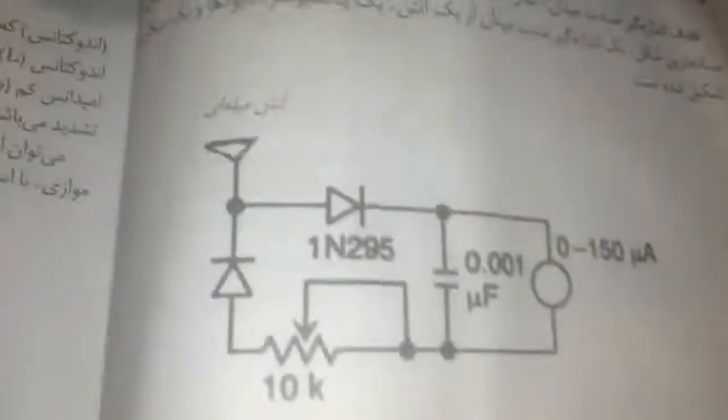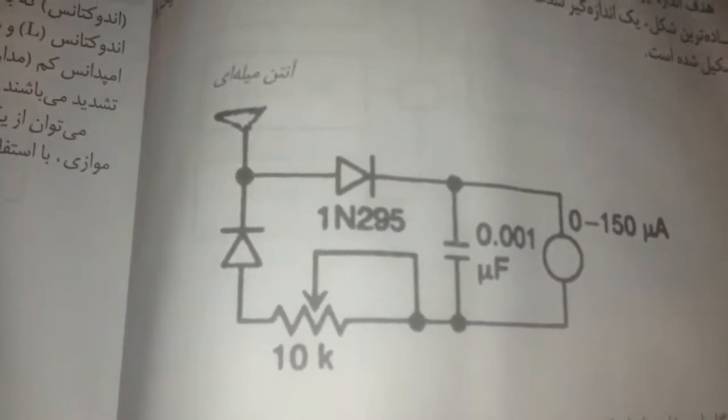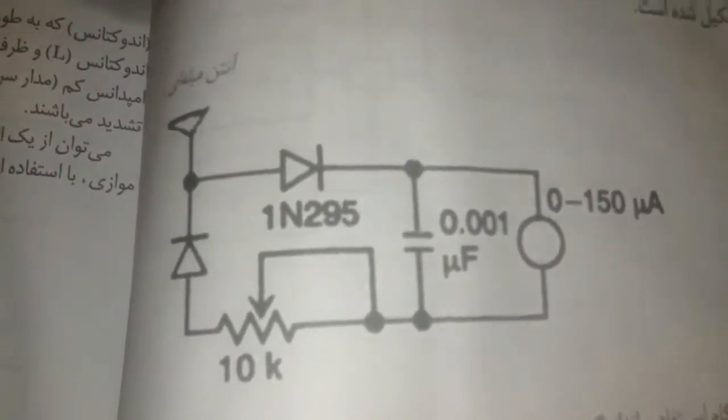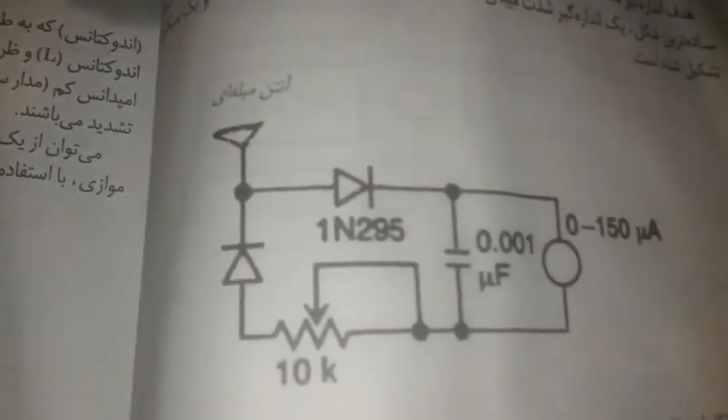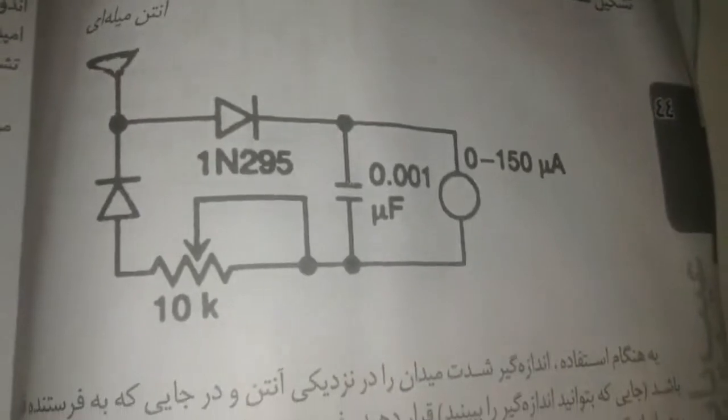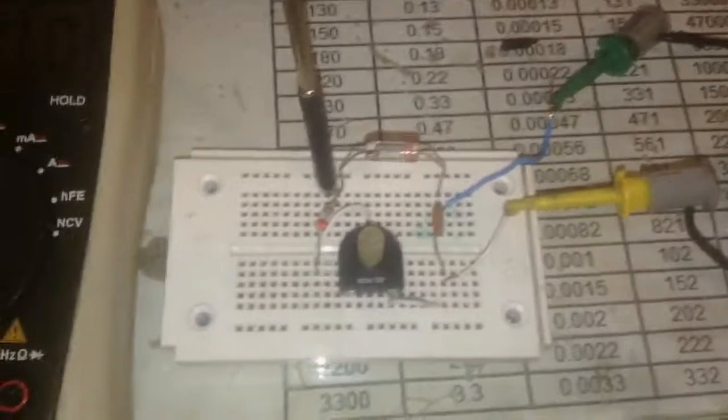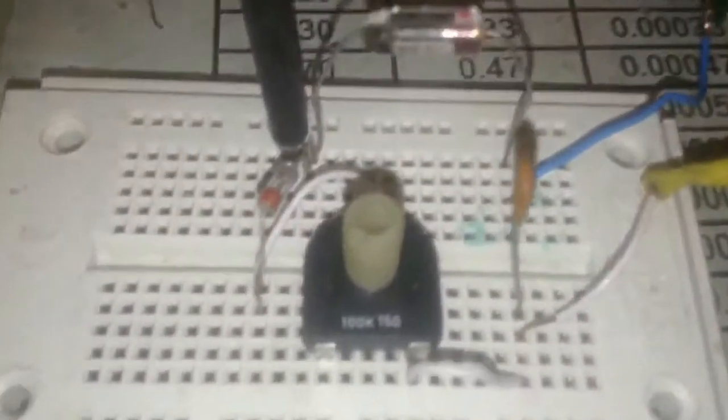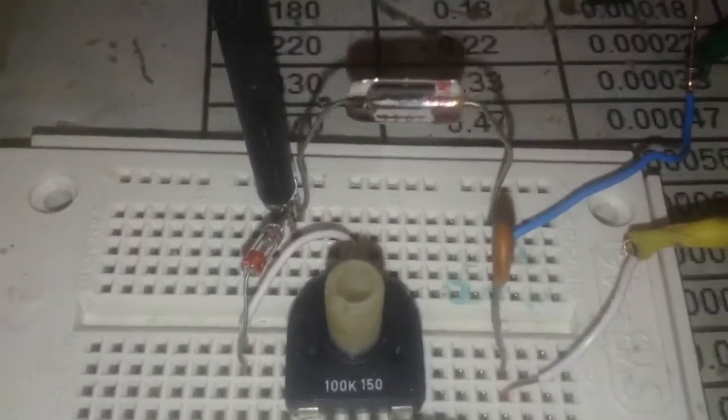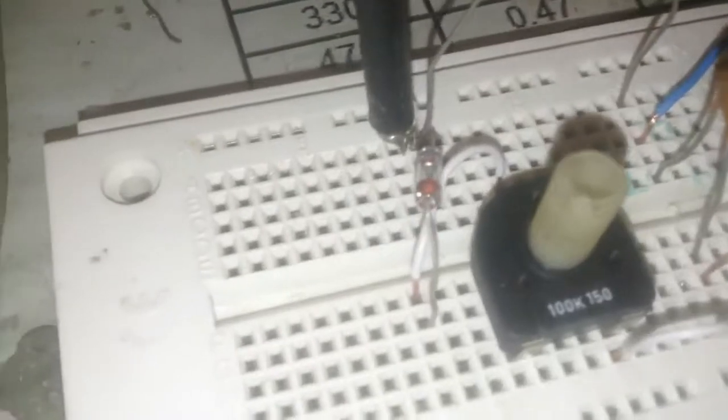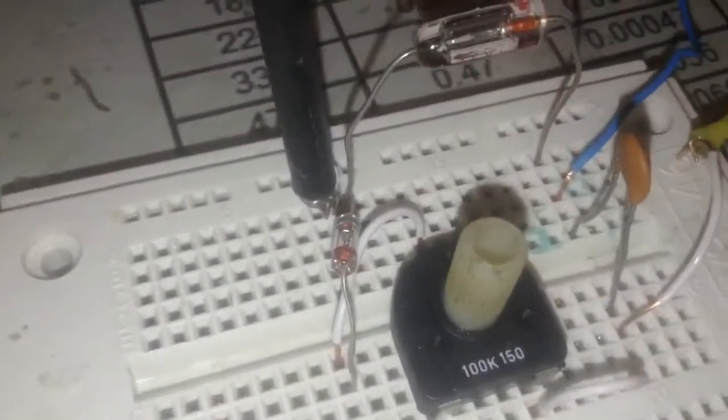It needs two germanium diodes - one 1N295 and one capacitor is good enough for the frequency detection. Here is the project: my OA70 germanium diode and the next germanium diode.